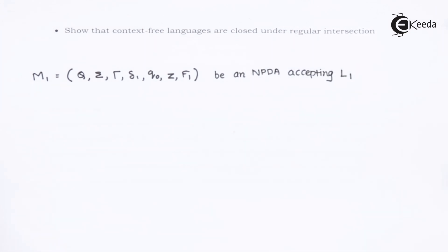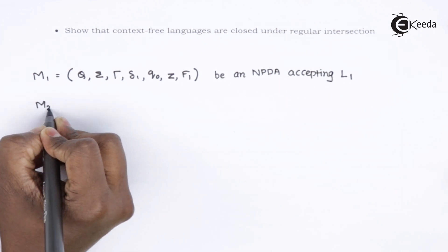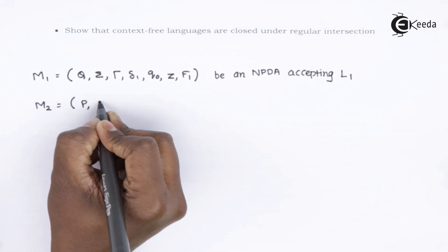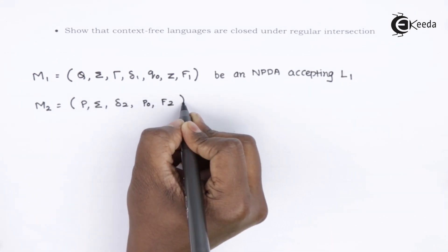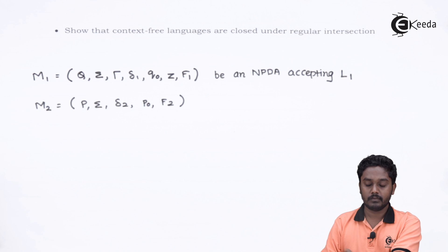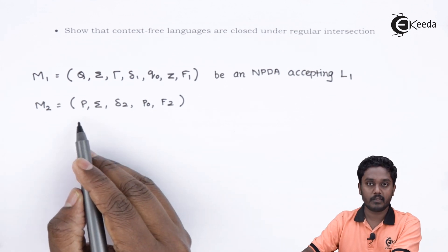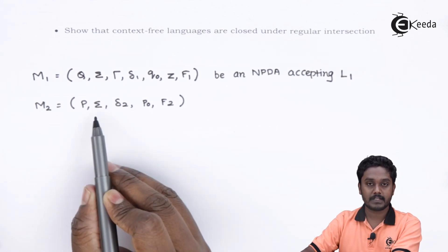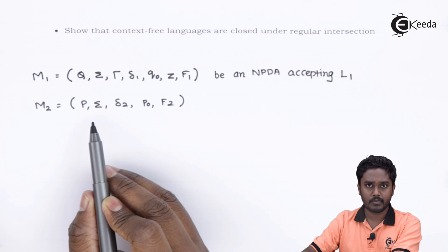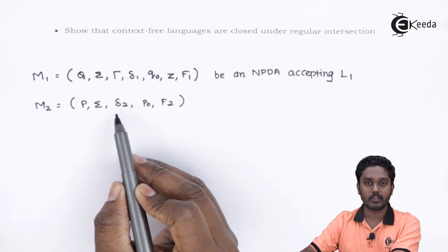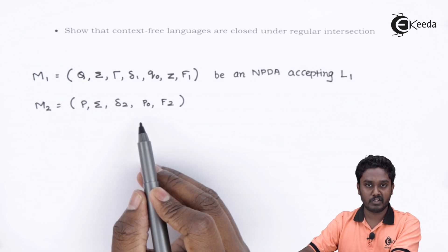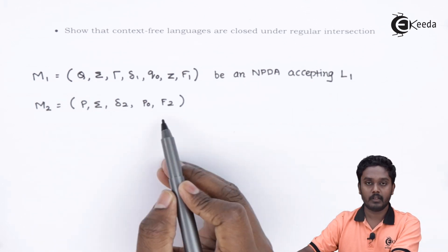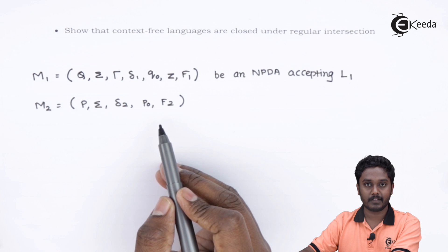Now let us define machine M2. M2 is defined as: P — the set of states; Sigma — again the set of alphabets; DELTA2 — the transition function; V0 — the initial state; and F2 — the set of final states.